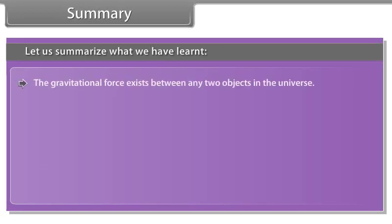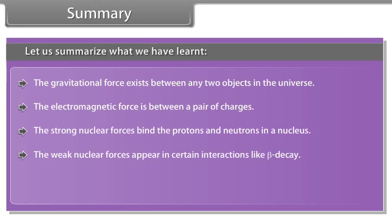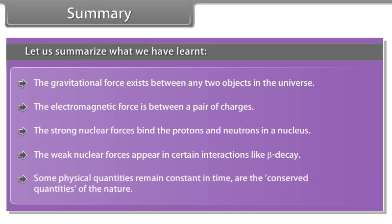The gravitational force exists between any two objects in the universe. The electromagnetic force is between a pair of charges. The strong nuclear forces bind the protons and neutrons in a nucleus. The weak nuclear forces appear in certain interactions like beta decay. Some physical quantities remain constant in time; these are the conserved quantities of nature.